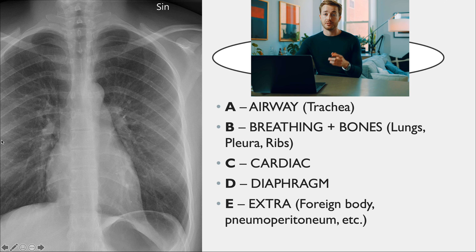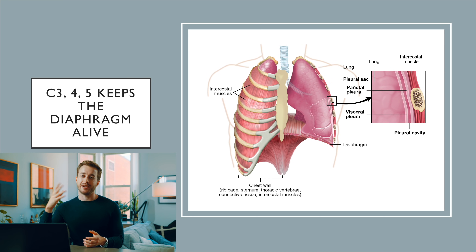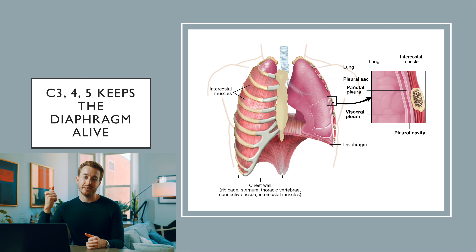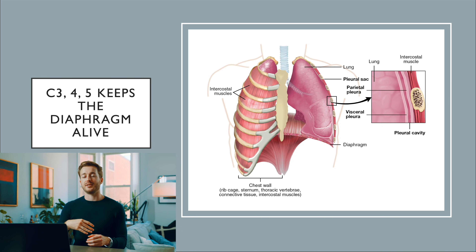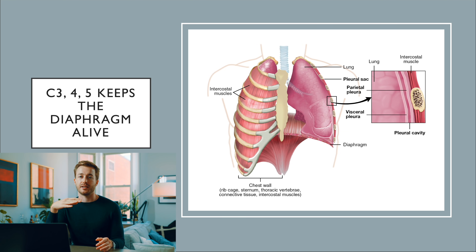One I really like: C3, C4, C5 keeps the diaphragm alive. C3, C4, C5 are the nerve roots that form the phrenic nerve, which innervates the diaphragm and tells it to move up and down to breathe.